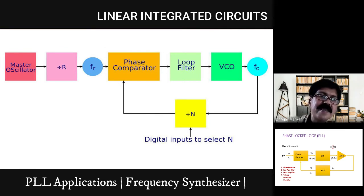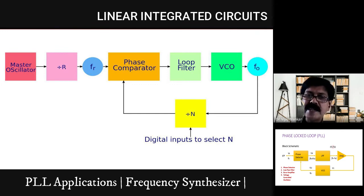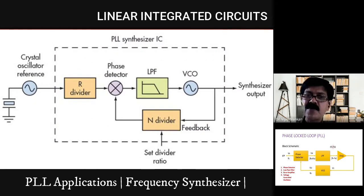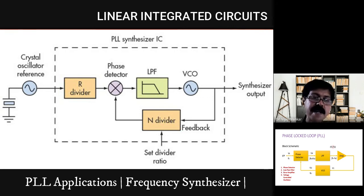This is another application — the frequency synthesizer. There is a source frequency from a crystal oscillator, say reference frequency FR. We have a divide-by-N network and a programmable set of switches. Here you can divide by 2, divide by 3, divide by 4, and so on — separate switches are set up in this synthesizer. These switches, when pressed, select the divide-by-N ratio.